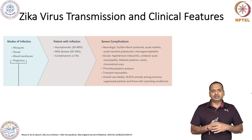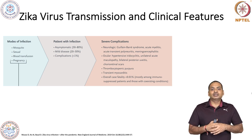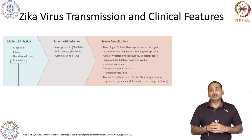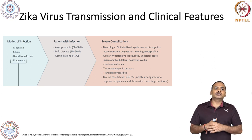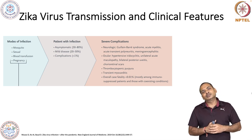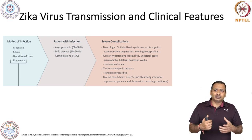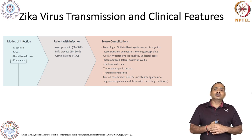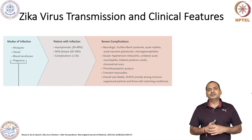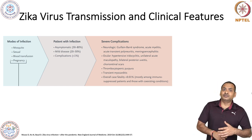There is also thrombocytopenic purpura and transient myocarditis, so the heart can be affected as well. Overall, the case fatality rate is less than 0.01 percent, occurring mostly among immunosuppressed patients and those with coexisting conditions. Similar to SARS-CoV-2, most fatalities are associated with individuals who have pre-existing diseases such as cardiovascular disease, metabolic disease, or cancer. This is also true for Zika virus.